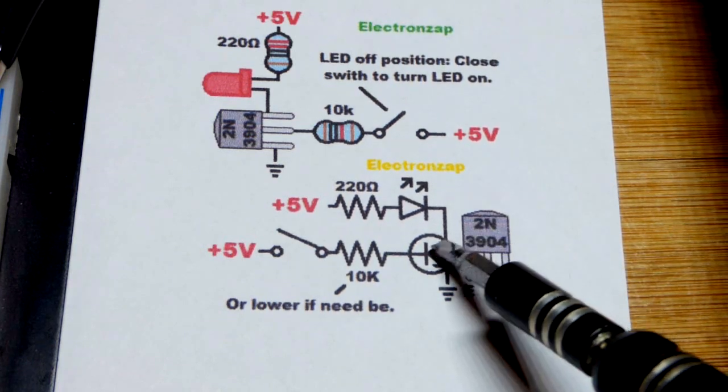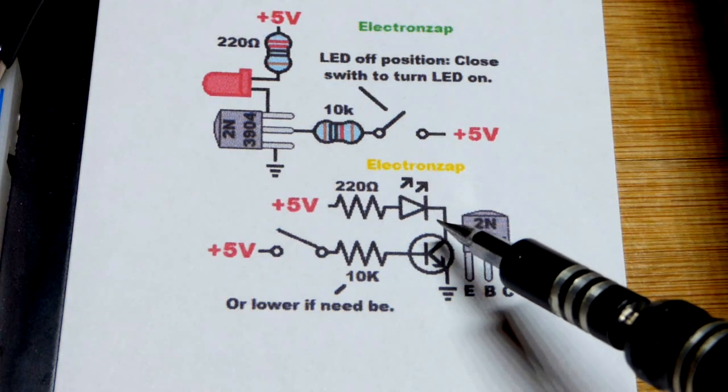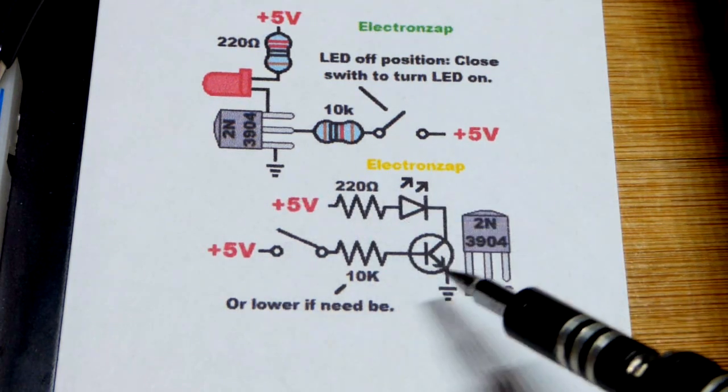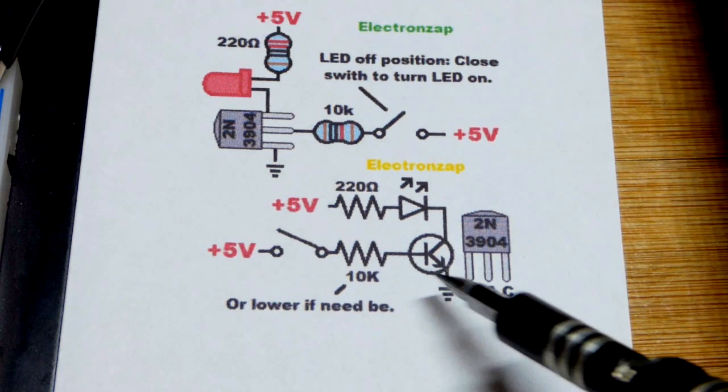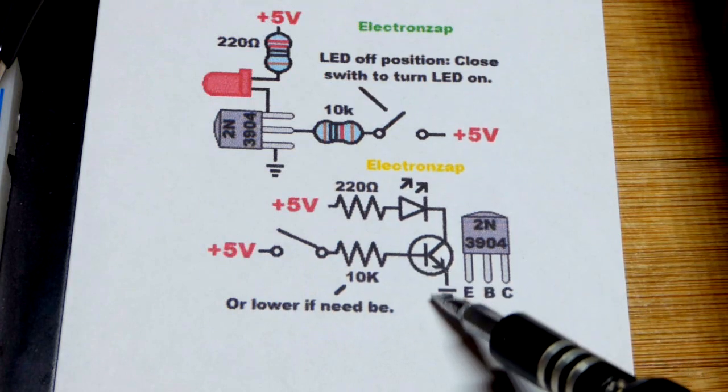And then the collector right there, that is the line without an arrow. So how well the collector to emitter conducts, you put the collector to the more positive side of the circuit, emitter towards the more negative side of the circuit, depends on how much current is flowing from base to emitter.